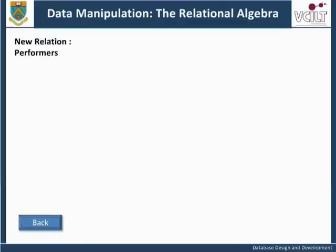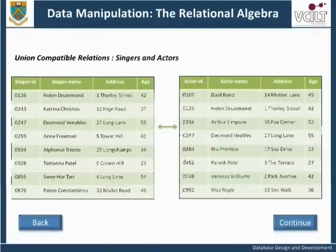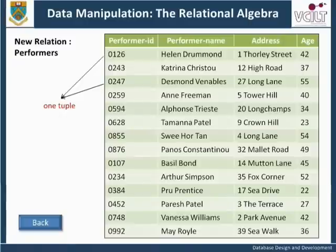The new relation, performers, contains one tuple for every tuple that was in the relation singers or the relation actors. If a tuple appeared in both singers and actors, it will appear only once in the new relation performers. This is why there is only one tuple in the relation performers for each of the individuals who are both actors and singers — Helen Drummond and Desmond Venables — forming a new relation containing details of all singers and actors.